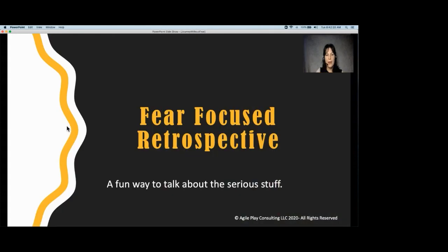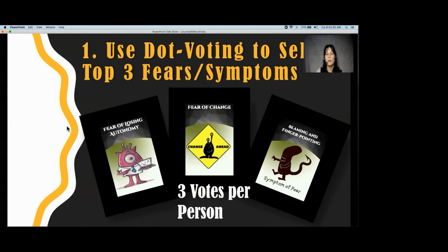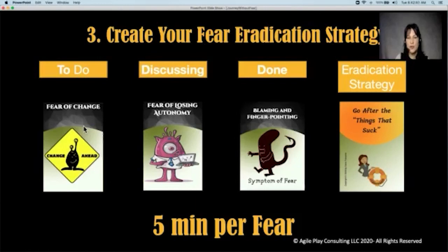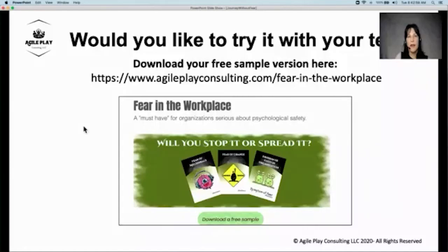Fear-focused retrospectives are something you can do — identifying which fear to talk about first, looking for different psychological safety tools to address that specific fear, and then going through a lean coffee conversation to discuss how to address it in your situation. If you'd like to try it with your teams, take a screenshot of this link to a pre-sample version of both the Fear in the Workplace and the Psychological Safety game, so you can experiment and see how to start conversation about fears and change from talking about fear to talking about how to make things better in your team.